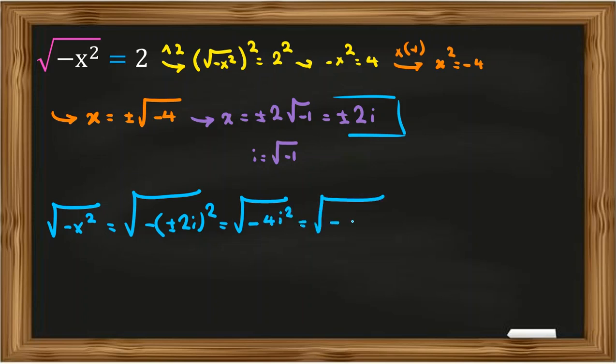i squared is negative 1, so it will be negative 4 times negative 1, which equals square root of 4, which is 2 and equals 2. So both answers are correct.